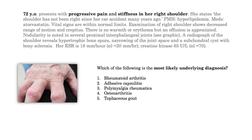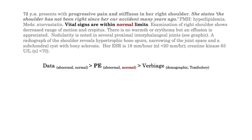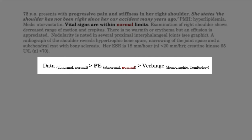We have an elderly patient with pain and shoulder stiffness. They offer the modifier that it is long-standing and perhaps related to an MVA from her distant past. She's on a statin, and we know statins can be associated with muscle pain, but it doesn't really fit the story. Statin-associated myopathy is not an answer option, so we can marginalize this information. They offer normal vital signs, and here we pull in a key dogma: data is more important than physical exam, which is more important than verbiage.